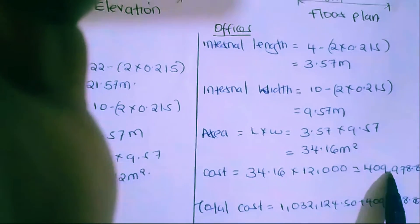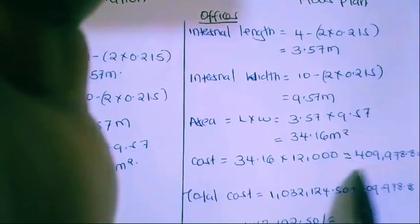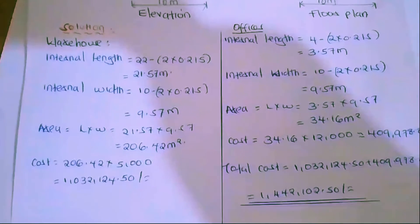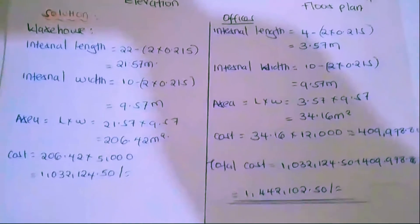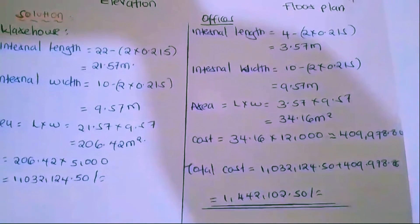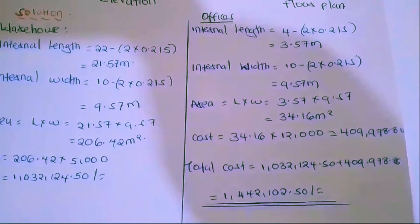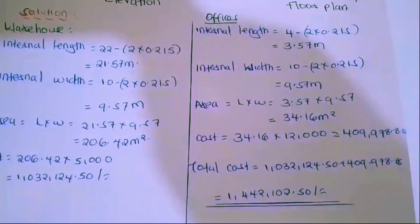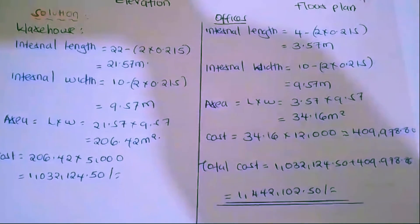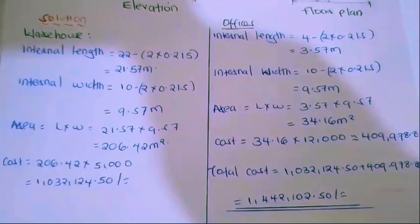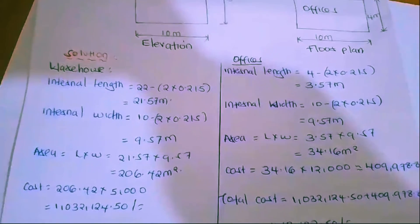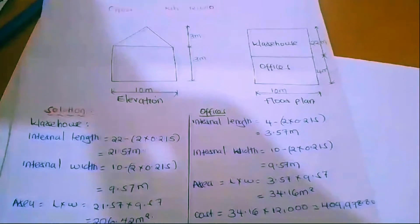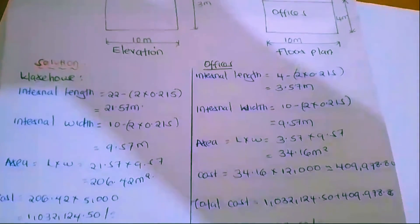The cost per square meter for the office is 12,000, so we multiply 34.16 by 12,000, giving us 409,978.80 shillings. To get the total cost of the building, we add the cost of the warehouse — 1,032,124.50 — to the cost of the office — 409,978.80 — giving us a total of one million, four hundred and forty-two, one hundred and two shillings and fifty cents. That is how we estimate the approximate cost of a building using the superficial area method. Thank you.